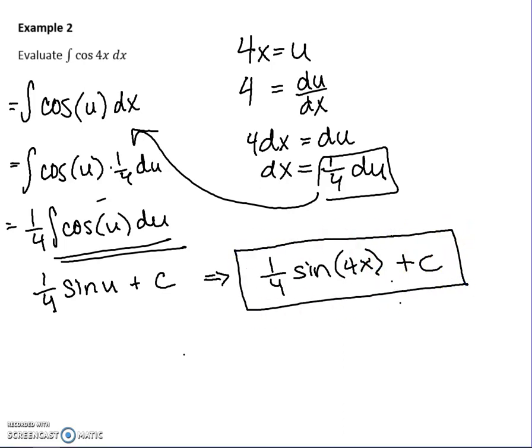Again, you can always check your work by taking the derivative of this and you should get back to cos of 4x.